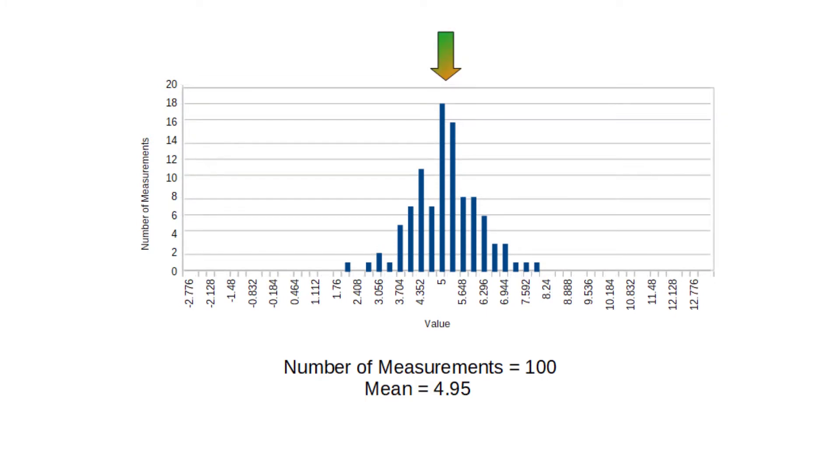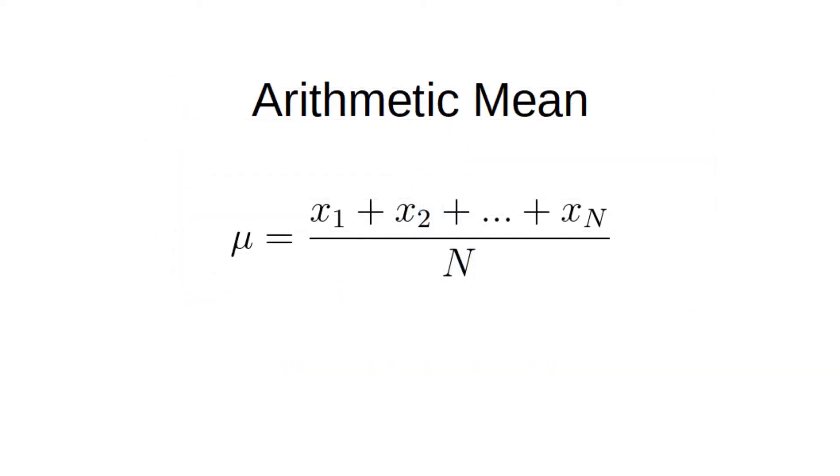The peak in this bell curve is the average, or mean, of the distribution. We can also find this by adding all the measurements together and dividing by the total number of measurements.